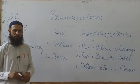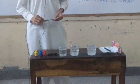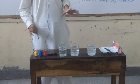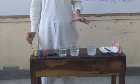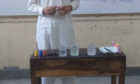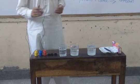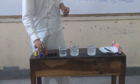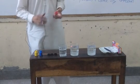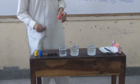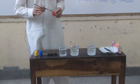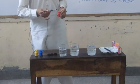Let's see these colors. Students, now we practice making secondary colors from primary colors. First of all, we have taken three colors — red, yellow, and blue.